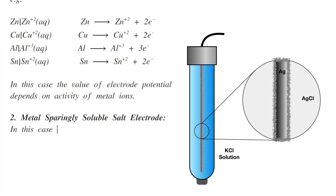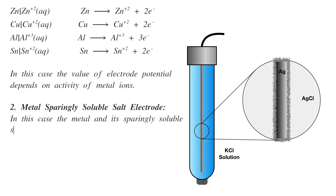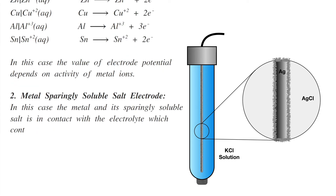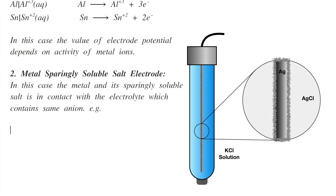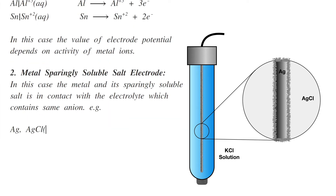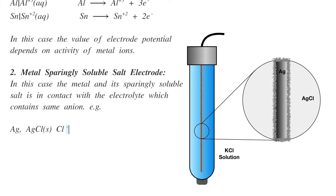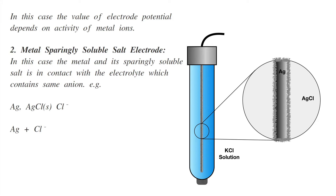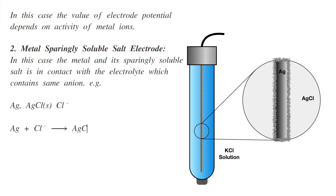The second type: the metal and its sparingly soluble salt are in contact with an electrolyte containing the same anion. For example, silver and silver chloride solid in contact with chloride ions. The oxidation reaction is: Ag + Cl⁻ → AgCl(s) + e⁻.